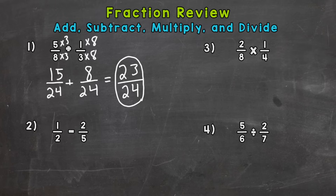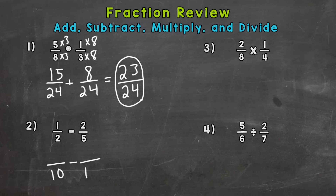Number 2: on to subtraction. Subtraction is the same exact thing as addition — you just subtract instead of add. So we have 1 half minus 2 fifths. We obviously don't have a common denominator there, so we are not able to subtract right off the bat. We need to find a common denominator, which again is going to be your least common multiple. For 2 and 5, the least common multiple is 10. I know 2 times 5 is 10, and 1 times 5 is 5, so 1 half is equivalent to 5 tenths.